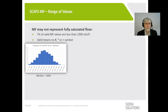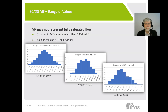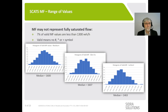These histograms show the spread of MF values across three regional computers. The Carlton computer covers more inner suburbs with more pedestrian interference and shared lanes, so its lower median MF is not surprising. What is instructive is that quite a lot of values are low — using 1300 as a threshold — indicating they may not represent fully saturated flow. This is not surprising for many lanes, particularly at smaller intersections, where queues clear every cycle throughout the day.